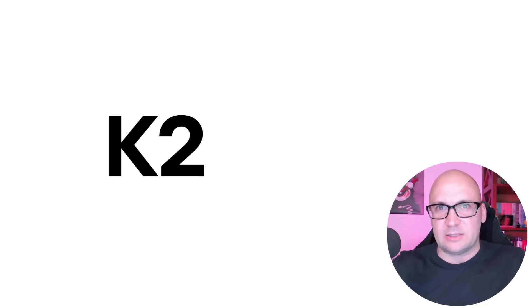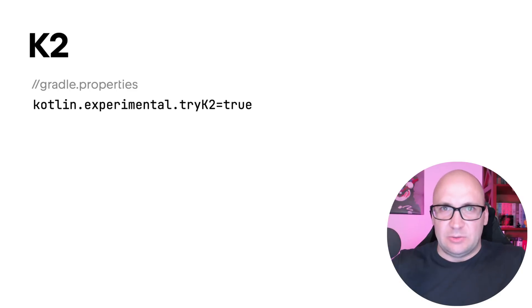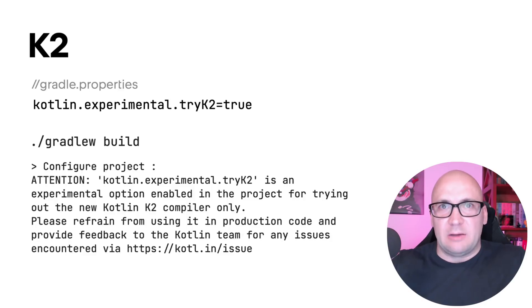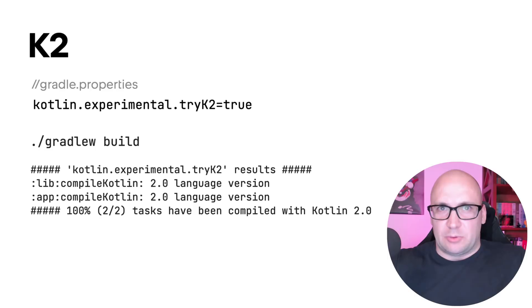The work on K2 compiler continues, and the new release introduces basic support for Kotlin Native and adds some fixes for Kotlin.js. This means that K2 is now available for multiplatform projects. There is now a new property to enable K2 in the multiplatform setting. You can either add the property to the Gradle properties file or add it as a command-line argument.